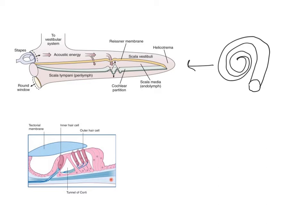How precisely does this transduction occur? What we're going to do is zoom in on one portion of this membrane. Specifically, the green membrane is called the basilar membrane. Sitting on top of the basilar membrane are a number of what are called hair cells. These hair cells have little cilia sticking out from the top of them, and these cilia are attached to another structure called the tectorial membrane. The tectorial membrane is like a little cap sitting on top of the cilia projecting from the hair cells.